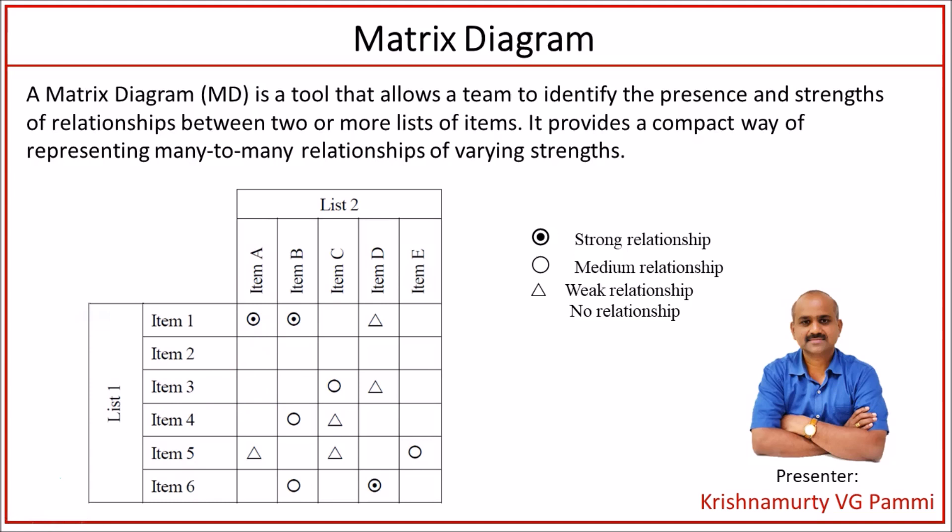So a matrix diagram is a tool that allows a team to identify the presence and strength of relationships between two or more lists of items. It provides a compact way of representing many-to-many relationships of various strengths.